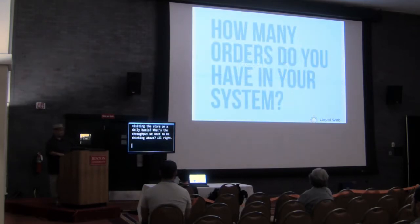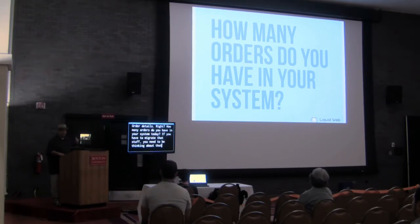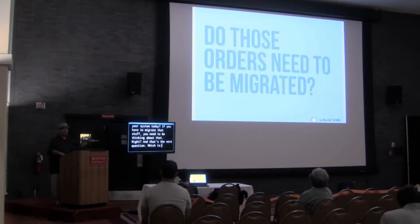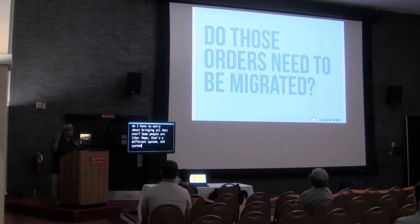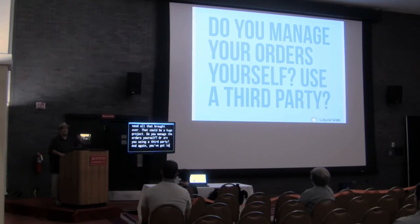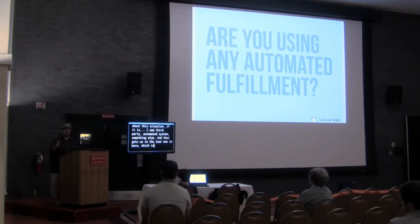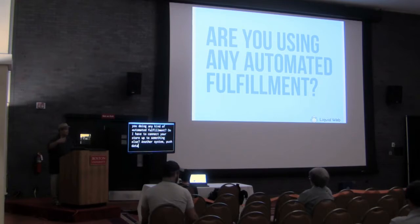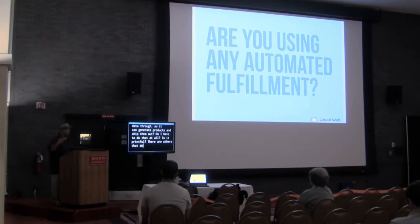Order details: How many orders do you have in your system today? If you have to migrate that data, you need to think about it. Do you need to bring all that over? Some people say the old system doesn't matter; others need everything migrated — that could be a huge project. Do you manage orders yourself or use a third party? And are you doing any kind of automated fulfillment? Do I have to connect your store to another system — like Printful — to generate and ship products?